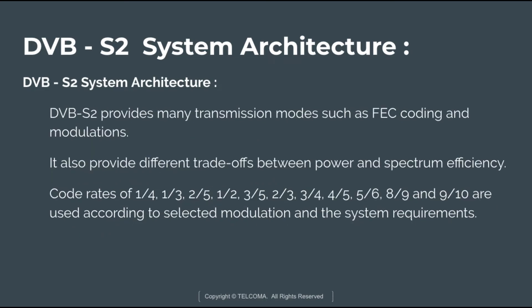DVB-S2 provides many transmission modes such as FEC coding and modulation. Digital transmission via satellites is affected by power and bandwidth limitations, so DVB-S2 provides multiple transmission modes offering different trade-offs between power and spectrum efficiency. The code rates used are 1/4, 1/3, 2/5, 1/2, 3/5, 2/3, 3/4, 4/5, 5/6, 8/9, and 9/10, selected according to the modulation and system requirements. The coding rates 1/4, 1/3, and 2/5 are introduced to operate with QPSK under exceptionally poor link conditions where the signal level is below the noise level.